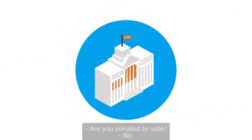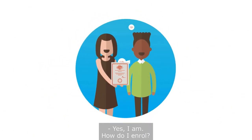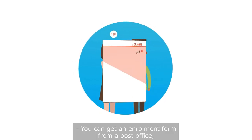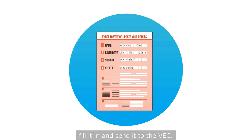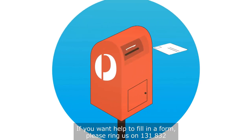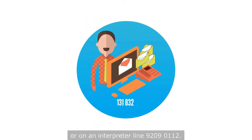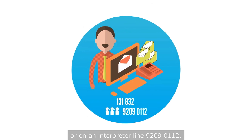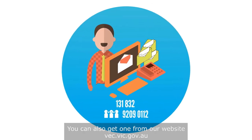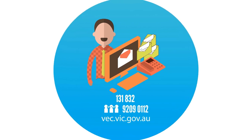Are you enrolled to vote? Are you an Australian citizen and over 18 years old? Yes, I am. How do I enrol? You can get an enrolment form from a post office, fill it in and send it to the VEC. If you want help to fill in a form, please ring us on 131 832 or on an interpreter line 9209 0112. You can also get one from our website vec.vic.gov.au.